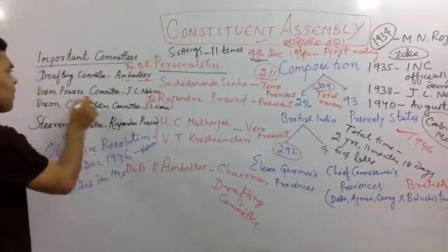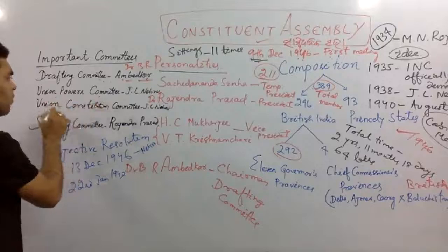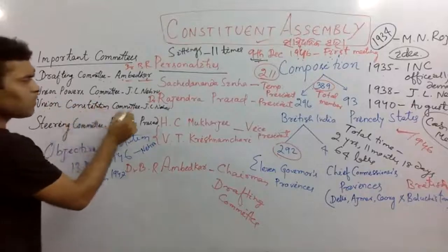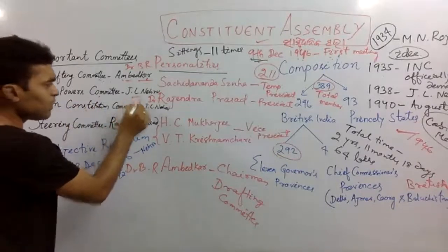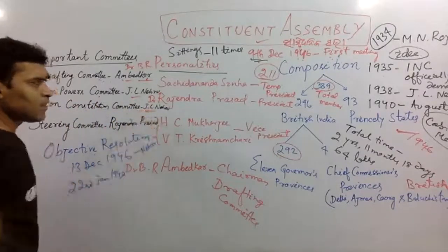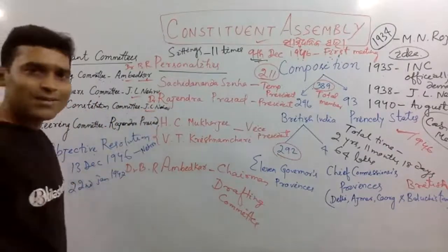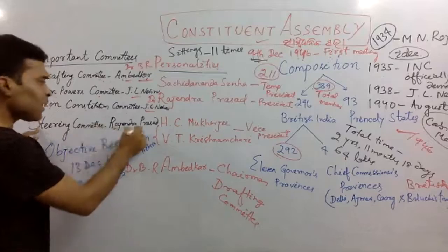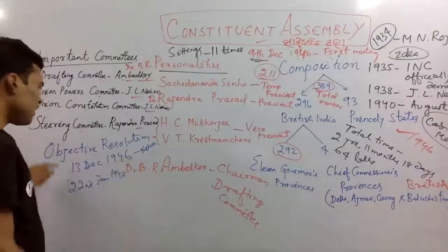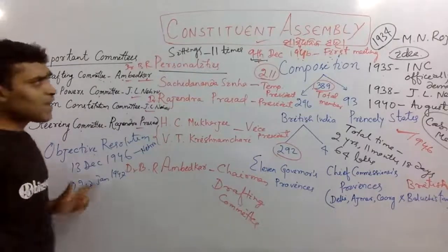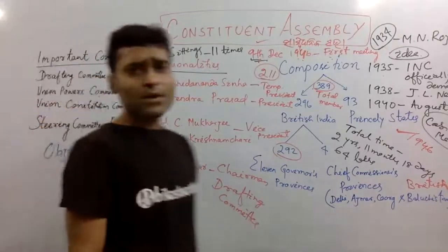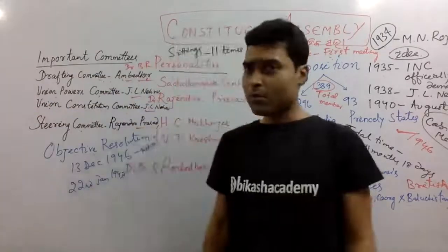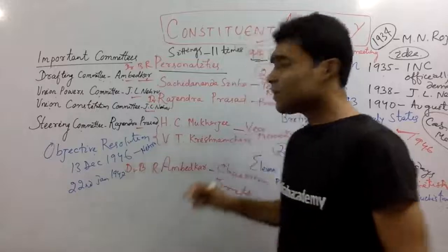The Union Power Committee, the Union Constitution Committee, and their chairmen, along with the Steering Committee — these were key committees of the Constituent Assembly.